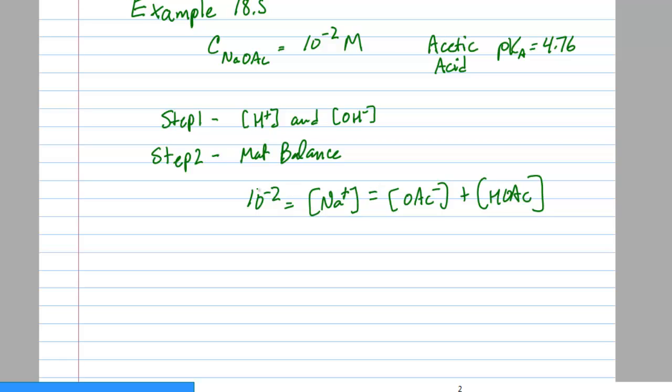Next I have the equilibrium relations. And Ka always in the acid form. The products will be acetate and H plus or hydronium. And the reactants will be acetic and water. But water has an activity of 1. And the other K that we have is for water. That's going to be H plus and OH minus and 10 to the minus 14.